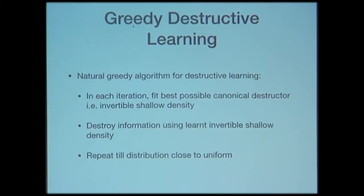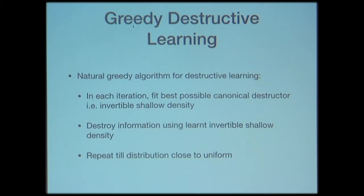Given this, here is a very simple greedy algorithm to learn a deep destructor using a composition of shallow destructors. In each iteration, fit the best possible canonical destructor — specifically fit an invertible shallow density like a decision stump — and then destroy the information you've learned by applying the destructor. Keep repeating this until the distribution is close to uniform. Each of these steps is well understood, and you don't need complicated engineering tricks to apply any of them.